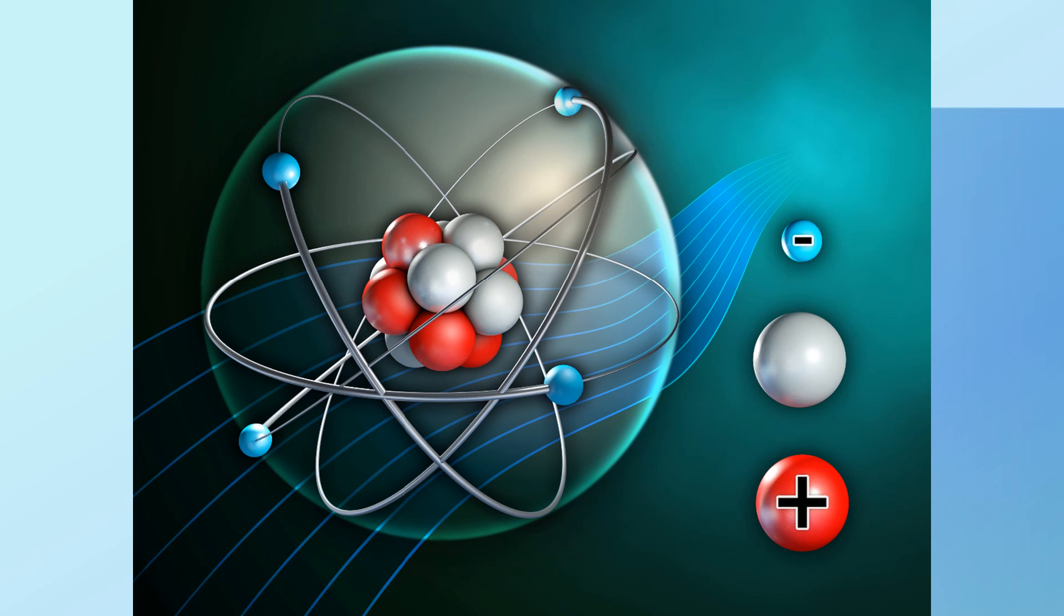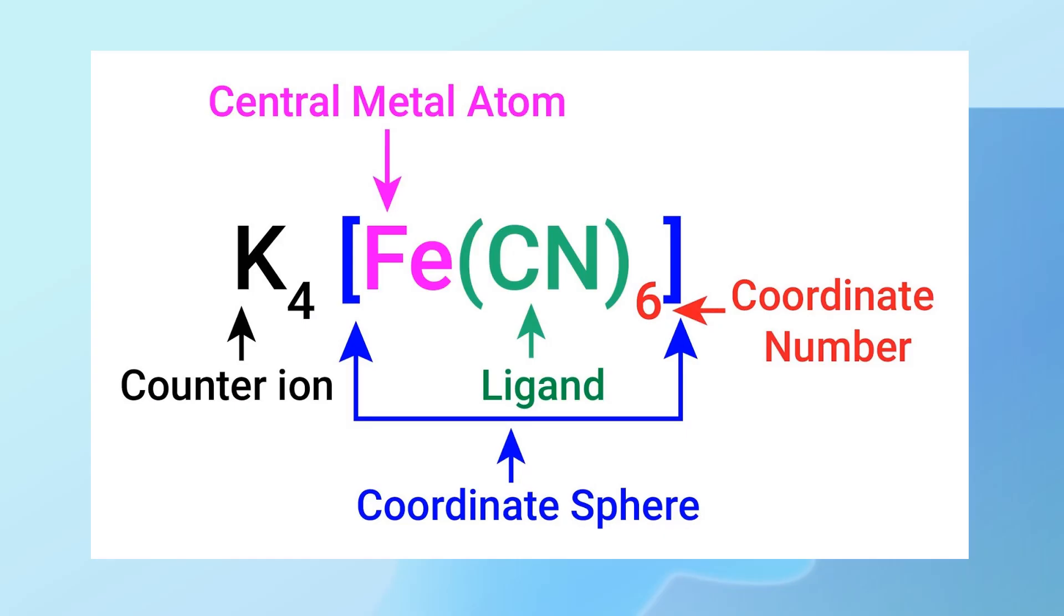In coordination compounds, the metal atom acts as a Lewis acid, and the ligands act as Lewis bases. The central metal atom or ion is the core of the coordination compound. It usually has vacant orbitals that can accept electron pairs from the ligands.